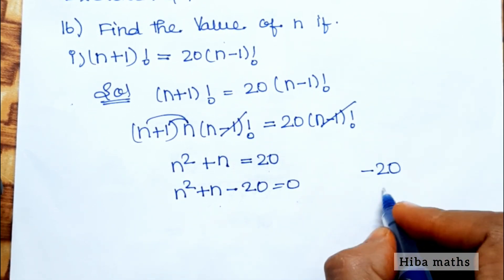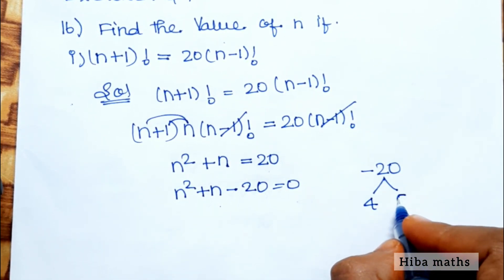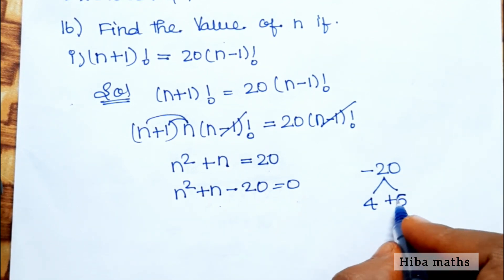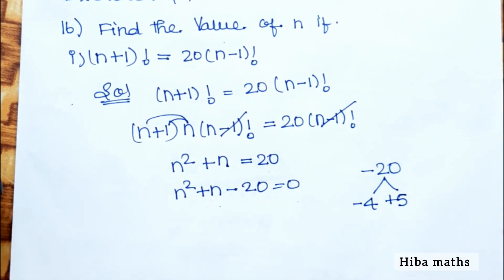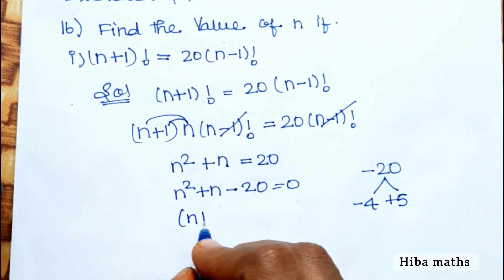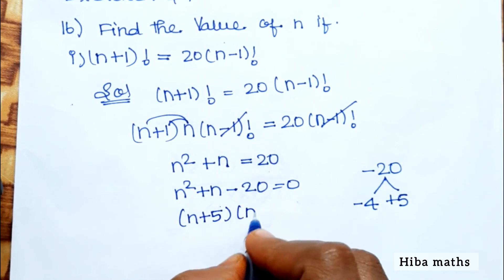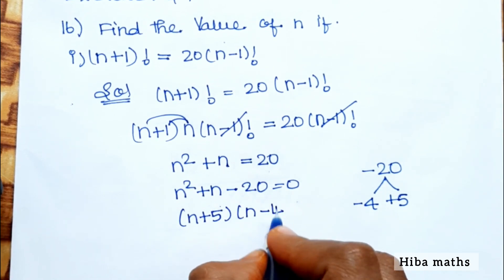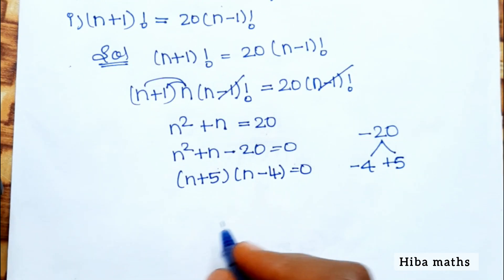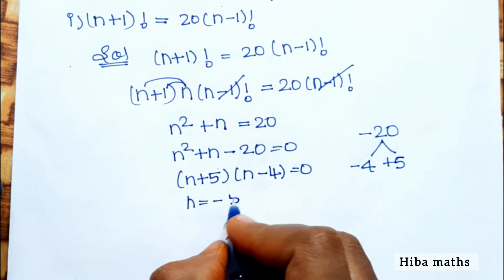Now we factor n² plus n minus 20 equals 0. Since 4 times 5 equals 20, we split the middle term to get (n+5)(n-4) equals 0. Therefore n equals minus 5 or n equals plus 4.